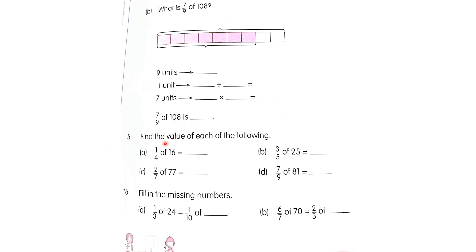Question 5: find the value of each of the following using the unit method. One over four of sixteen — one over four multiplied by sixteen, four fours are sixteen, and four ones are four, so the answer is four. Three over five of twenty-five: five fives are twenty-five, so one unit is five, and five multiplied by three is equal to fifteen.